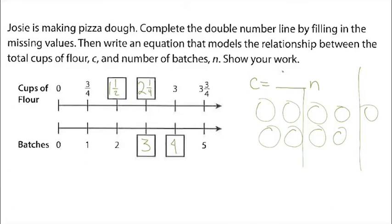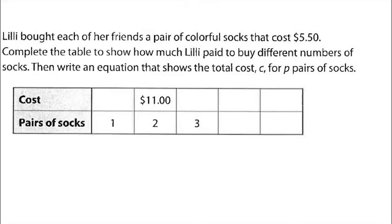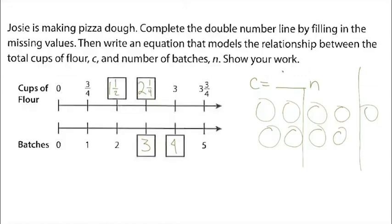So that's the answer to homework problem one. For the equation, I look for the value that has a denominator of one on the double number line, and what's left on top is what goes in front of n. The number of cups of flour equals three-quarters times the number of batches I want to make.